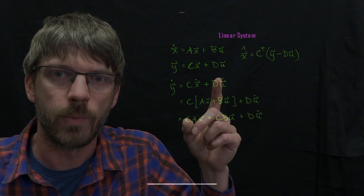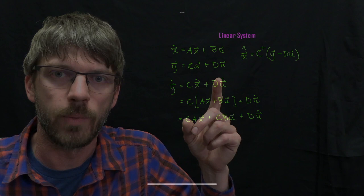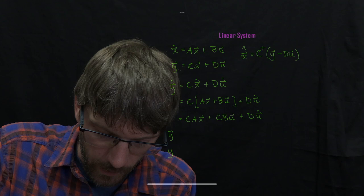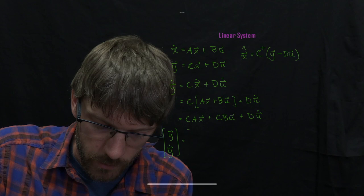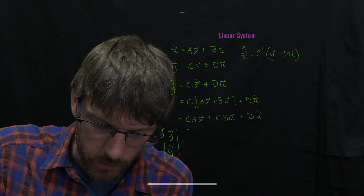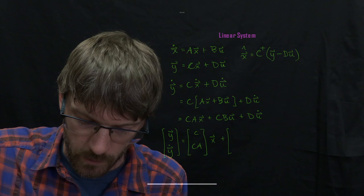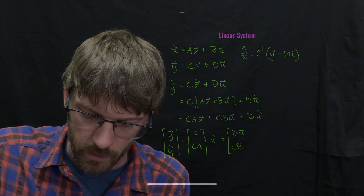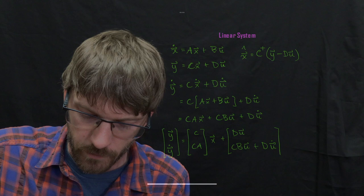Now we can add that to the measurements from above, essentially combining the measurements, the direct measurements we have and the derivative of those measurements. And if we put that all together, what we'll essentially have is y and y dot are equal to C and CA times x plus, on the top we'll have Du, and on the bottom for the second row we'll have CBu plus D u dot.